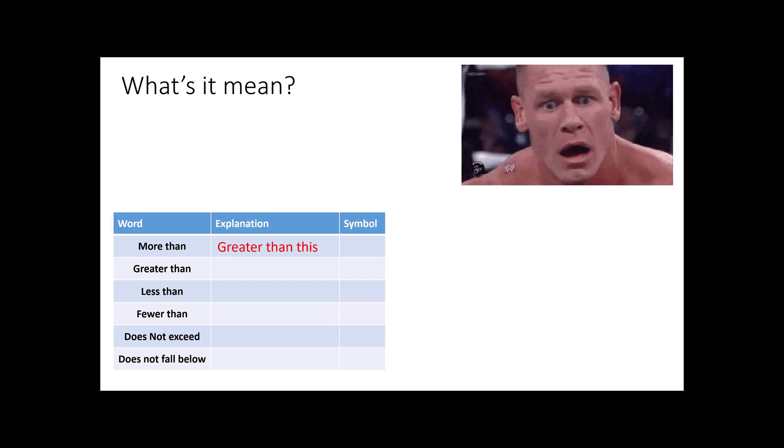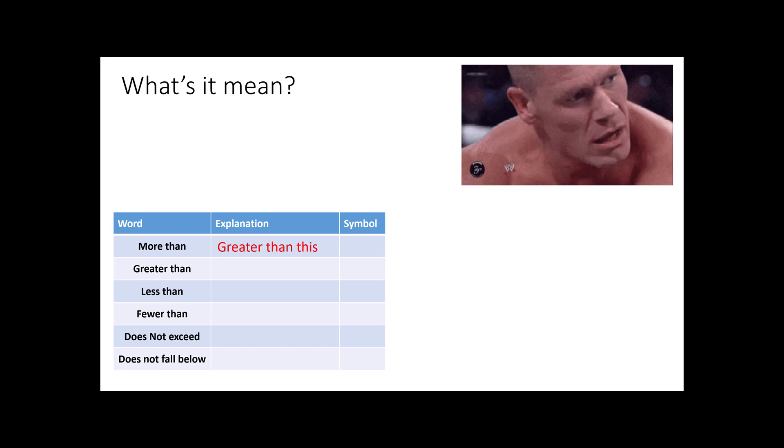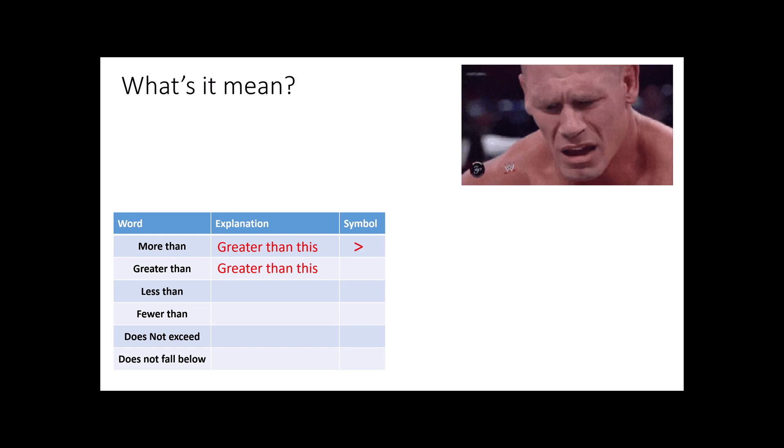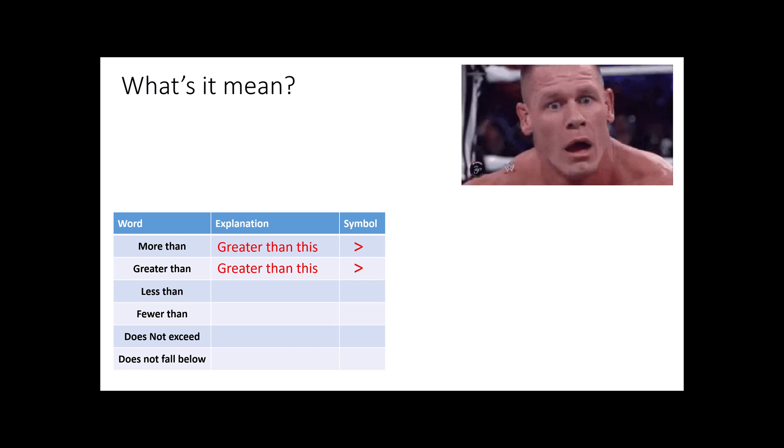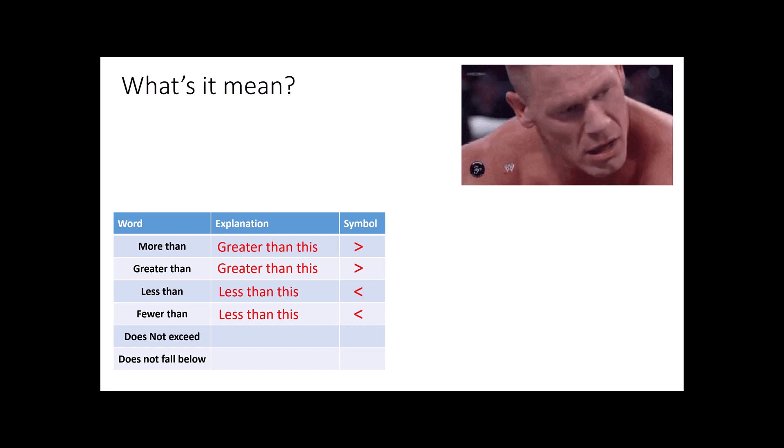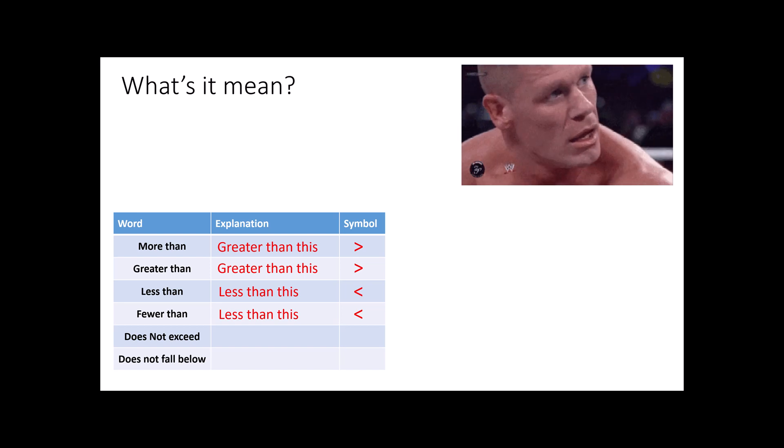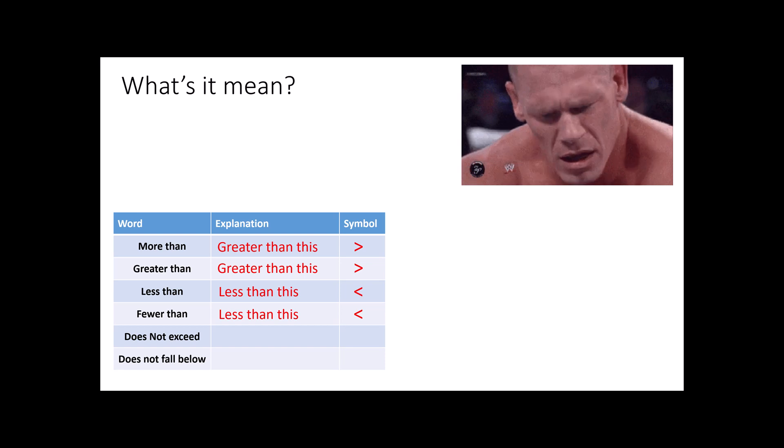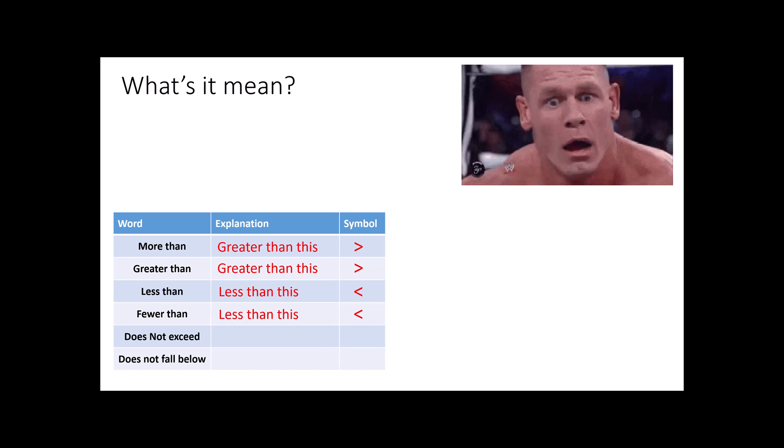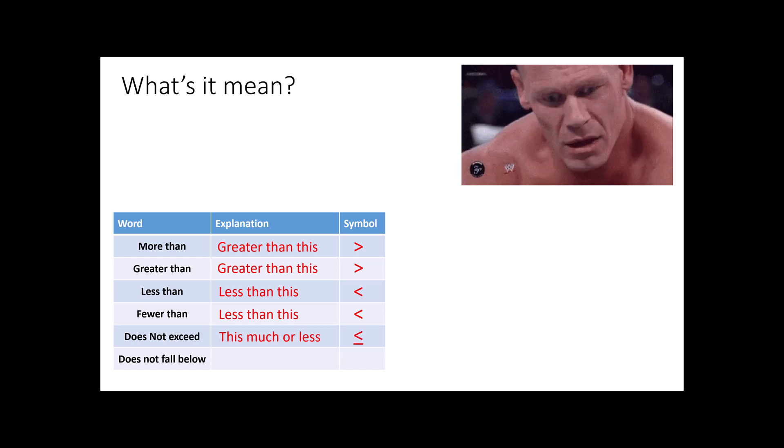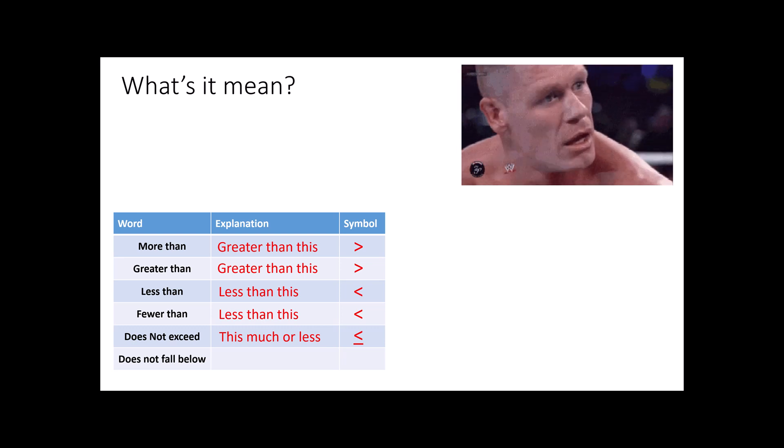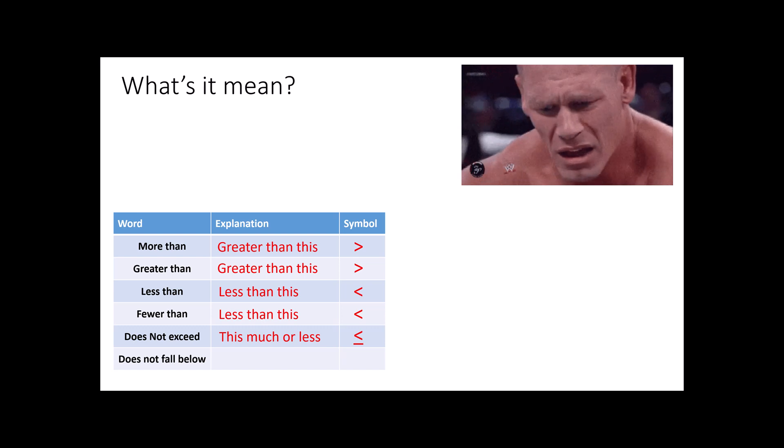When I use the expression more than in math, I'm essentially saying I want something greater than this, and we have a greater than symbol for that. The greater than phrase hopefully is pretty easy for you, as is the less than phrase and fewer than. But then we get into some more difficult phrases, like does not exceed. What does does not exceed mean? Well, does not exceed means this is the highest we can possibly go. Don't go any higher than this. This is fine, fewer than this is fine, but do not go beyond this. That makes this a less than or equal to sign. The same thing can be said for does not fall below. It's saying this is the very bottom, this is okay, anything above this is okay, but you cannot go below this. That's a greater than or equal to symbol.